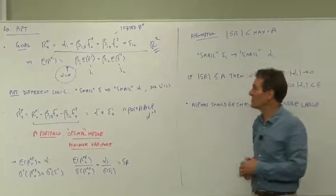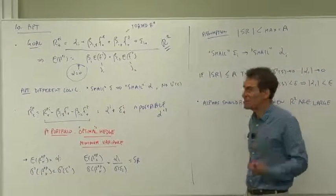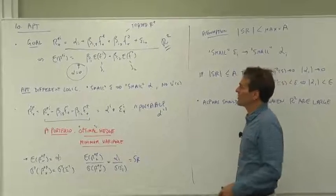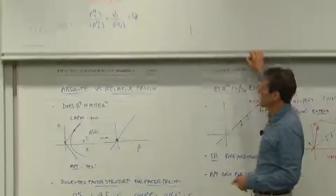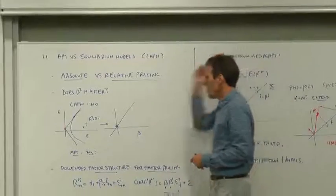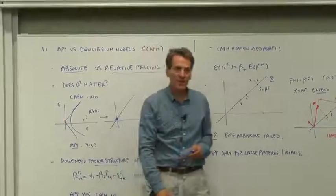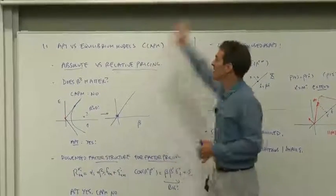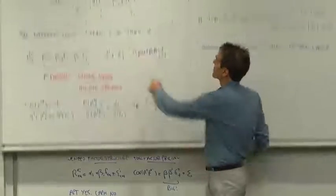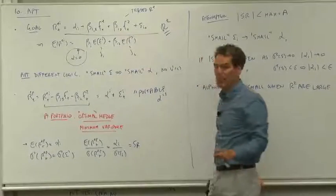Is the R squared of that regression important to the theoretical derivation of the model? The answer is, for the capital asset pricing model and equilibrium models, absolutely not.